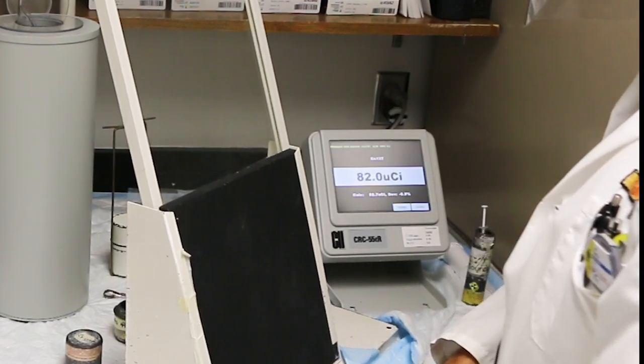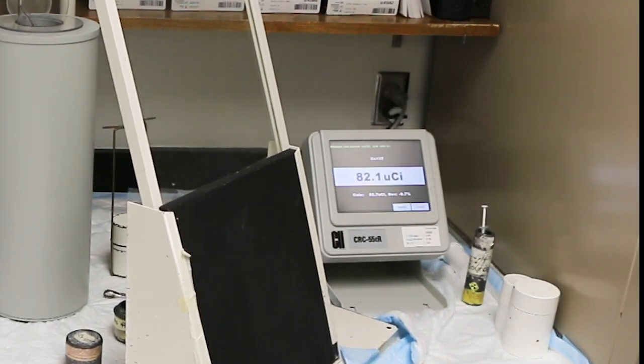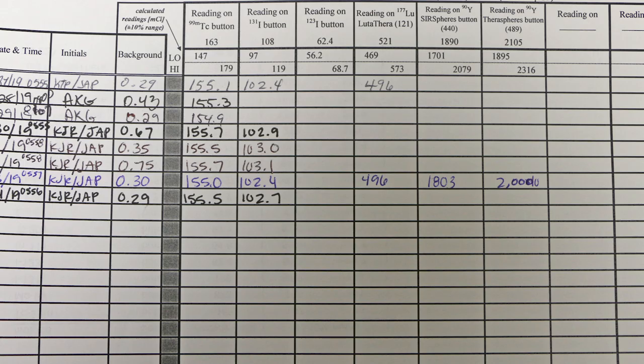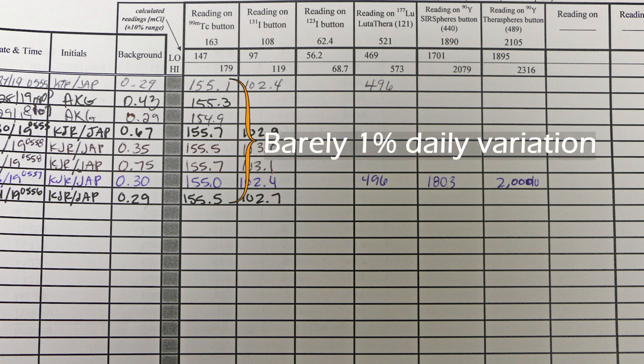Press the cesium-137 button on the dose calibrator until it lights up. Record the value. The acceptable value should be either 10% more or less than the value prescribed by the NRC for the source. The reason for a daily constancy check is to observe if the day-to-day reading for the same isotope remains consistent.